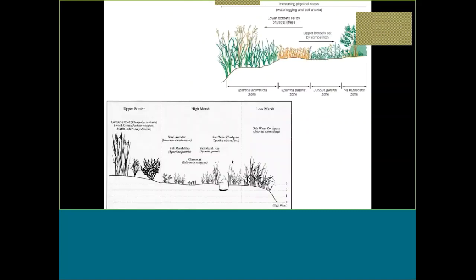Classic zonation ideas of low marsh and high marsh may hold true in a thin ribbon of area for a living shoreline, but for larger projects, a concept called microtopography comes into play — where little high and low areas naturally occur. This is actually a good thing: you don't want a marsh with just classic line zones that transition neatly. It's better to have little high and low spots throughout, where you may get little stands of Spartina patens and Spartina alterniflora mixed in.